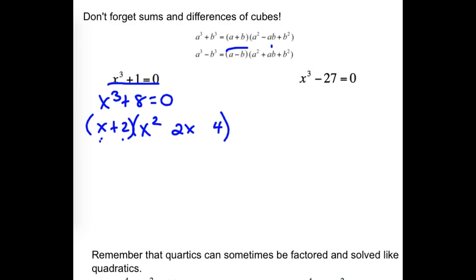If this had been x minus 2 as the first factor, then we would have a plus in that position. That's the only difference between the two formulas. Memorize the top one, but know the patterns so you can get the other one if needed.